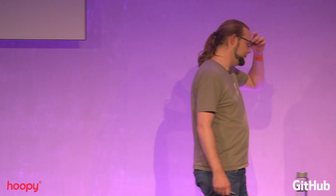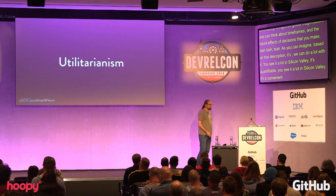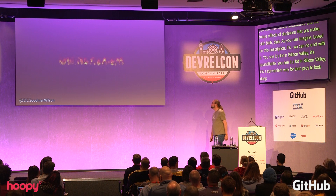You can also think about timeframes and how do you estimate the future effects of the decisions that you make. As you can imagine, based on this description of the theory, it's quite malleable. We can do a lot with it, which is why you see it a lot in Silicon Valley. It's also quantifiable, because we're talking about quantities of things. You see this a lot in Silicon Valley because it's a very convenient way for tech bros to look deep while justifying the worst of their desires. So burn this down.